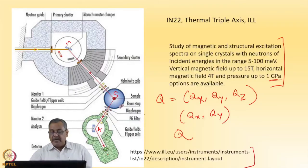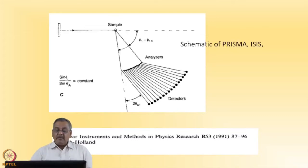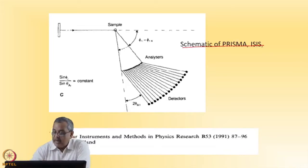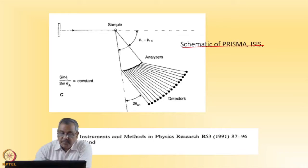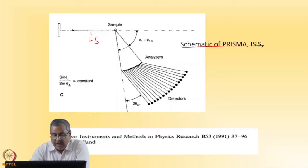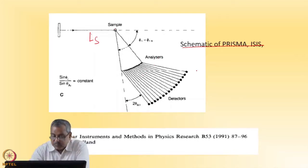Next, I will take you to an experimental setup in a Spallation Neutron Source. This is the schematic of the PRISMA instrument at ISIS. Here, we use the time-of-flight technique. We have a sample at a certain distance Ls, and then a bank of analyzers at a certain distance with varying angles, and then detectors.